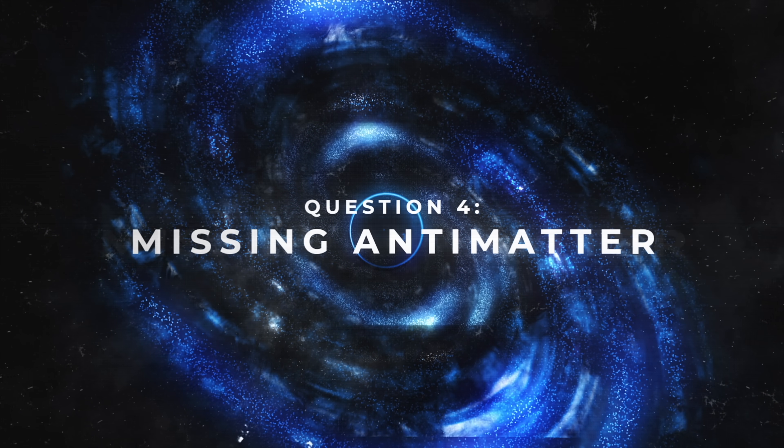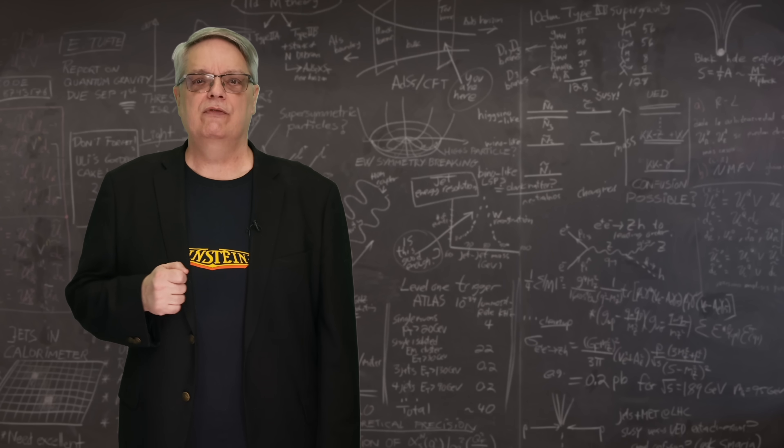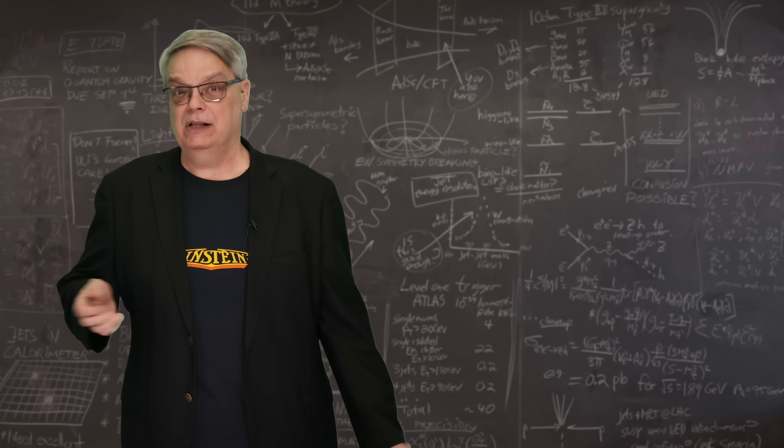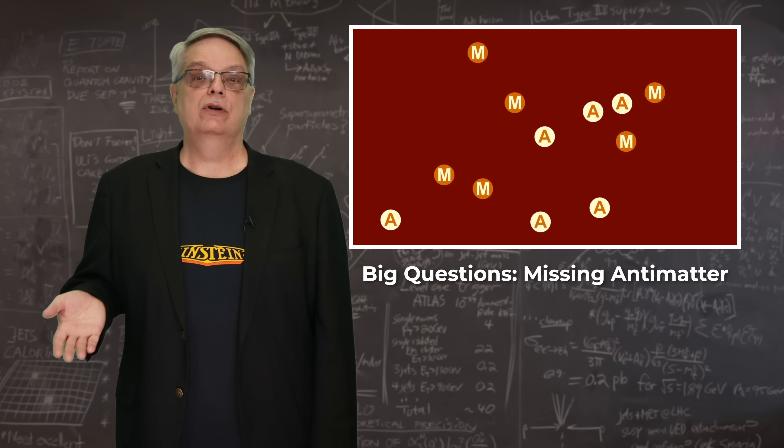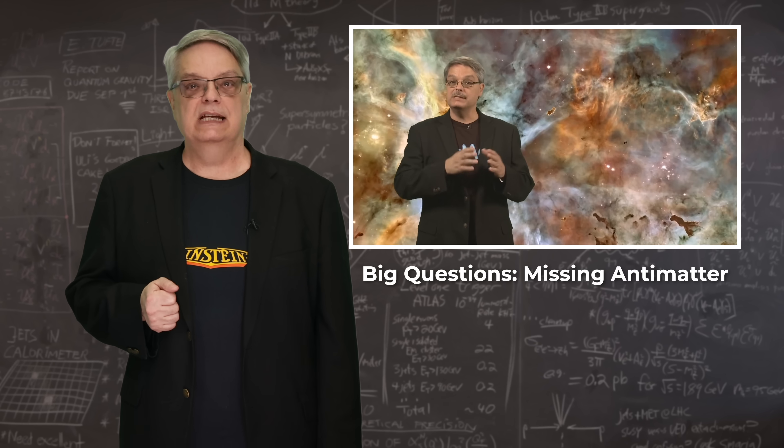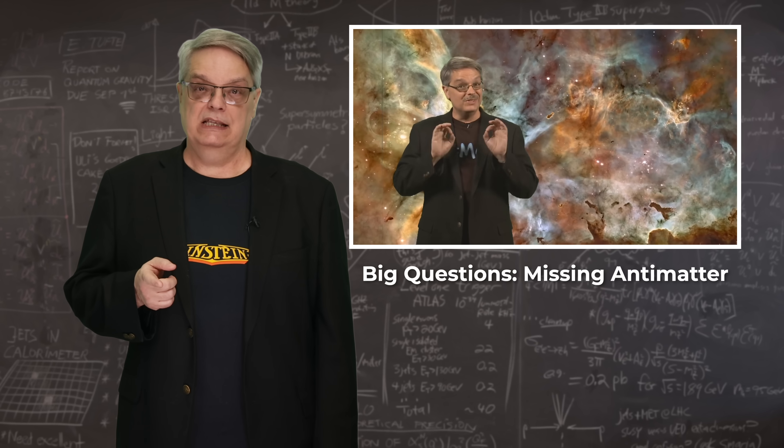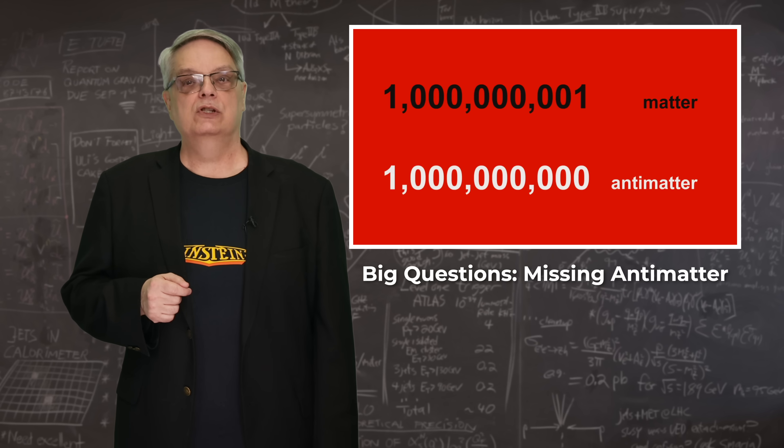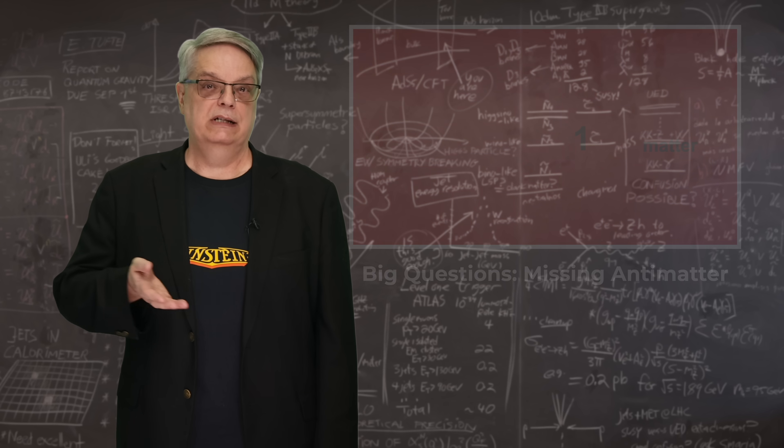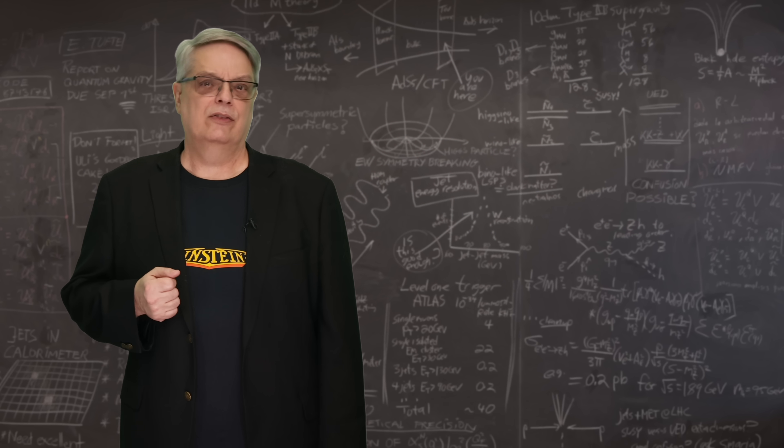My fourth example involves understanding the nature of the origins of the universe, which relies on two seemingly contradictory things. One is that the universe began in a hot, dense state called the Big Bang, and the early universe was full of energy. The second thing is that energy can be converted into matter and antimatter. Both of these things have been validated. Yet, when we combine these two ideas, we find that we can't explain our universe. Our universe is made solely of matter, while the theories say that we should have equal amounts of matter and antimatter. That's another unanswered question.